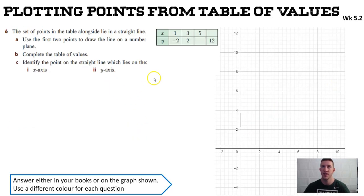Same thing with question 6, the set of points in the table alongside lie in a straight line. Here they're telling you it's a straight line but you're missing points. I want you to use what you know about straight lines, about how much x increases and how much y increases. If it's a linear relationship, remember linear and straight line go hand in hand. I want you to complete the table of values.